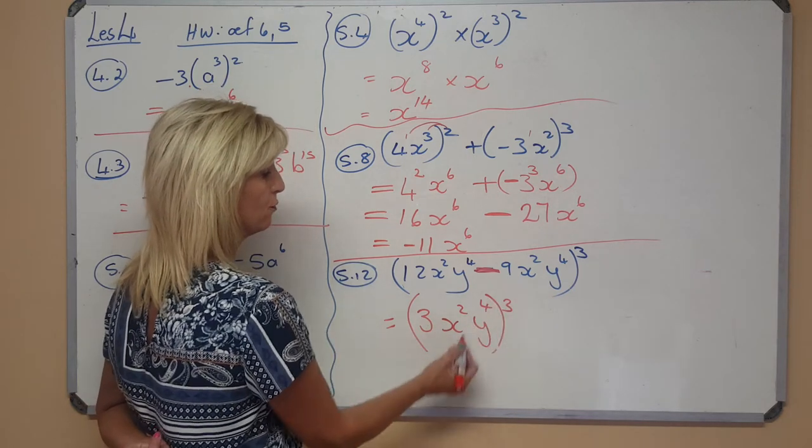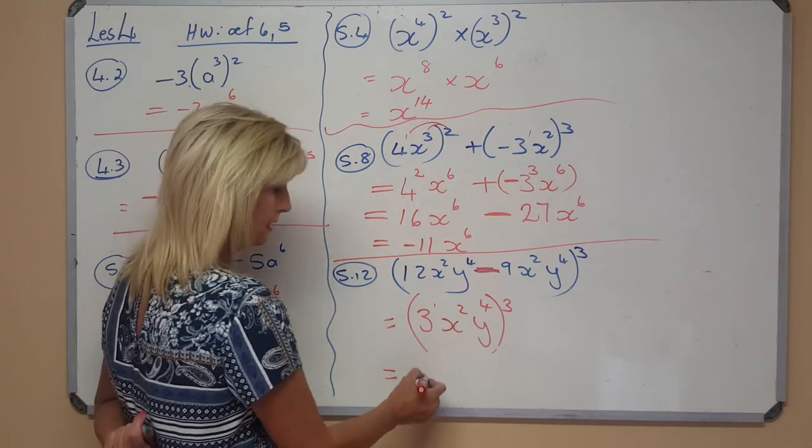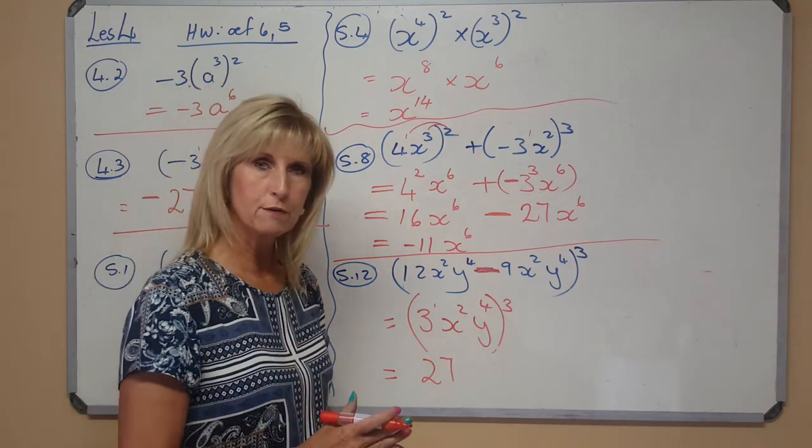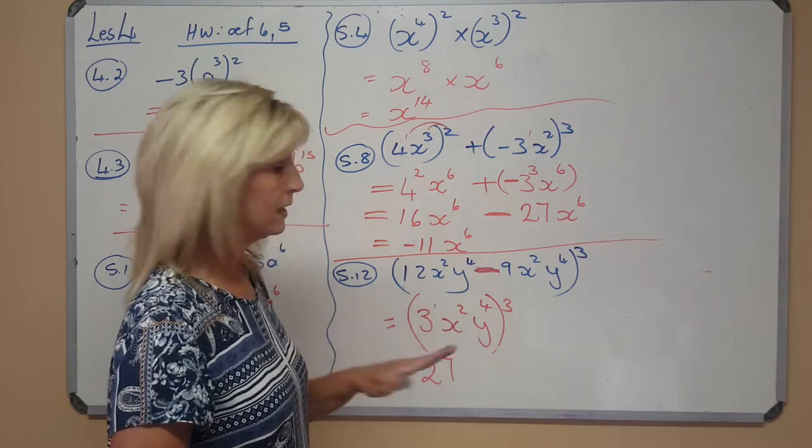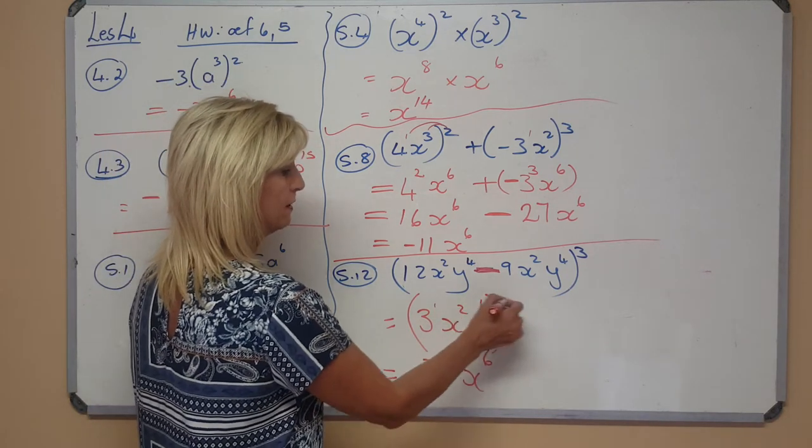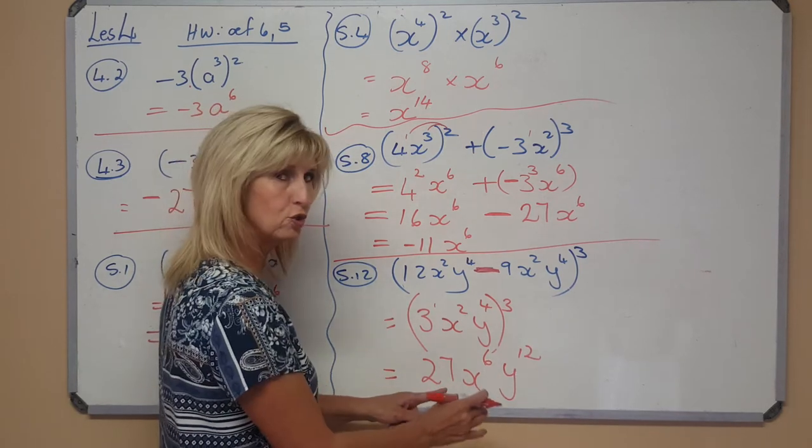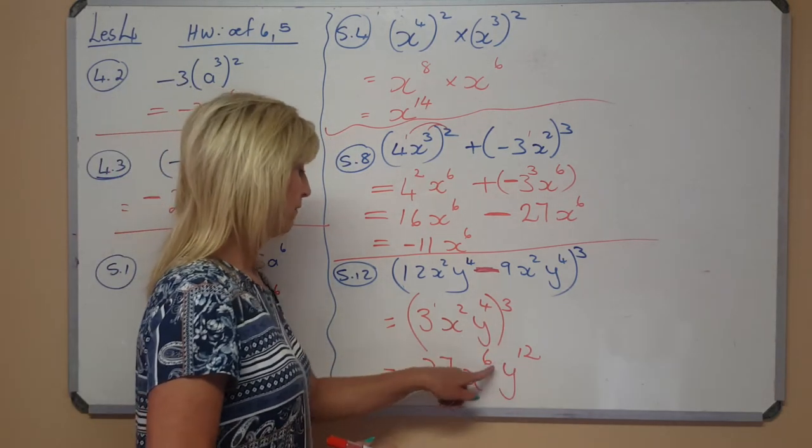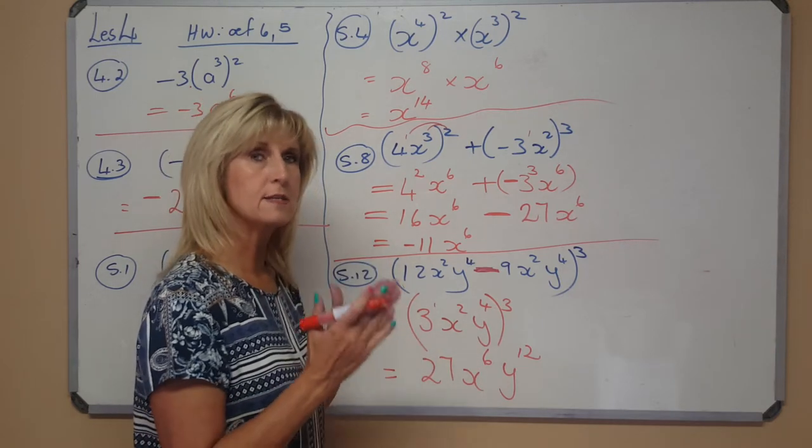But it's still in a big bracket with a 3 outside. And now you can go multiply in. Only if it's multiplication. So if I had 3 times 4, 3 times 2, and 3 times the 1 as well. Now you can first again say 1 times 3 is 3 to the 3, or you can immediately say 27. But if you know your powers of 2 and your powers of 3 out of your head, you can immediately write 27. And x to the power 2 times 3 is 6, and 4 times 3 is 12. And then you can't do anything further. For everything, there is a rule.